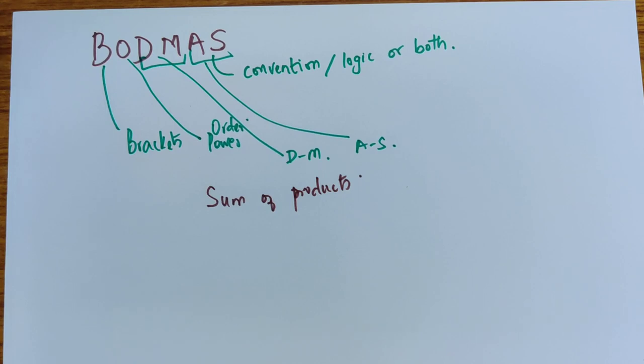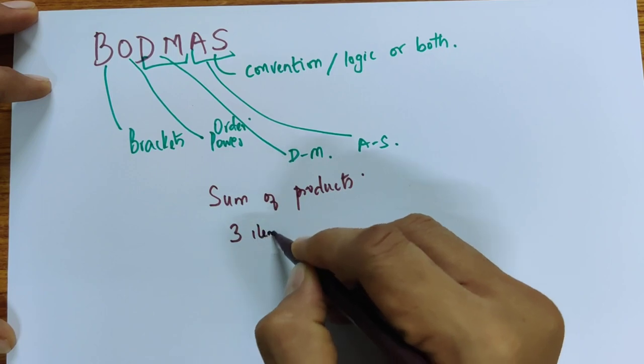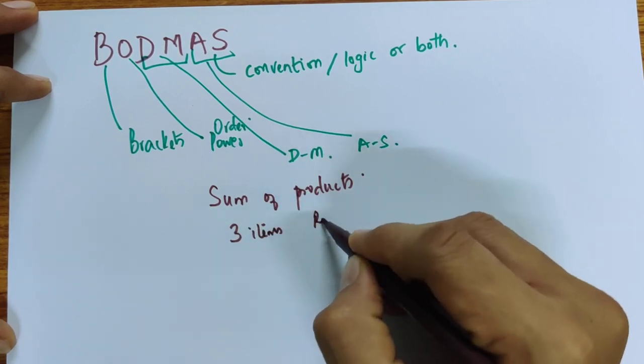So if I went and bought 3 items for 5 rupees each and 4 items for 6 rupees each.